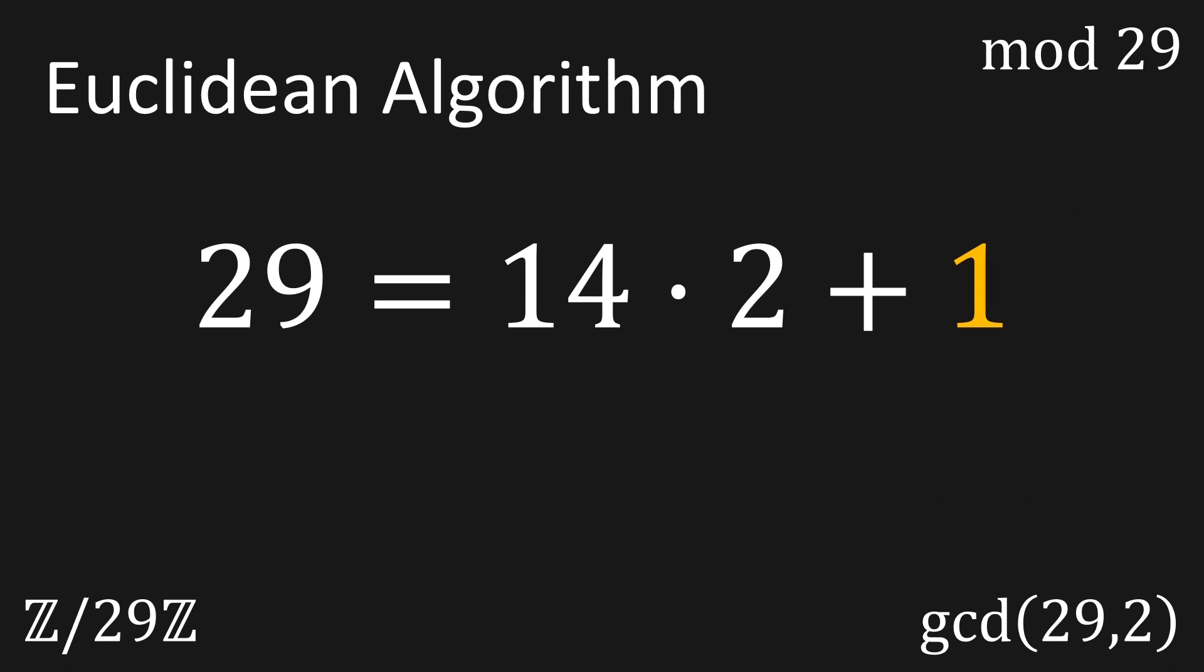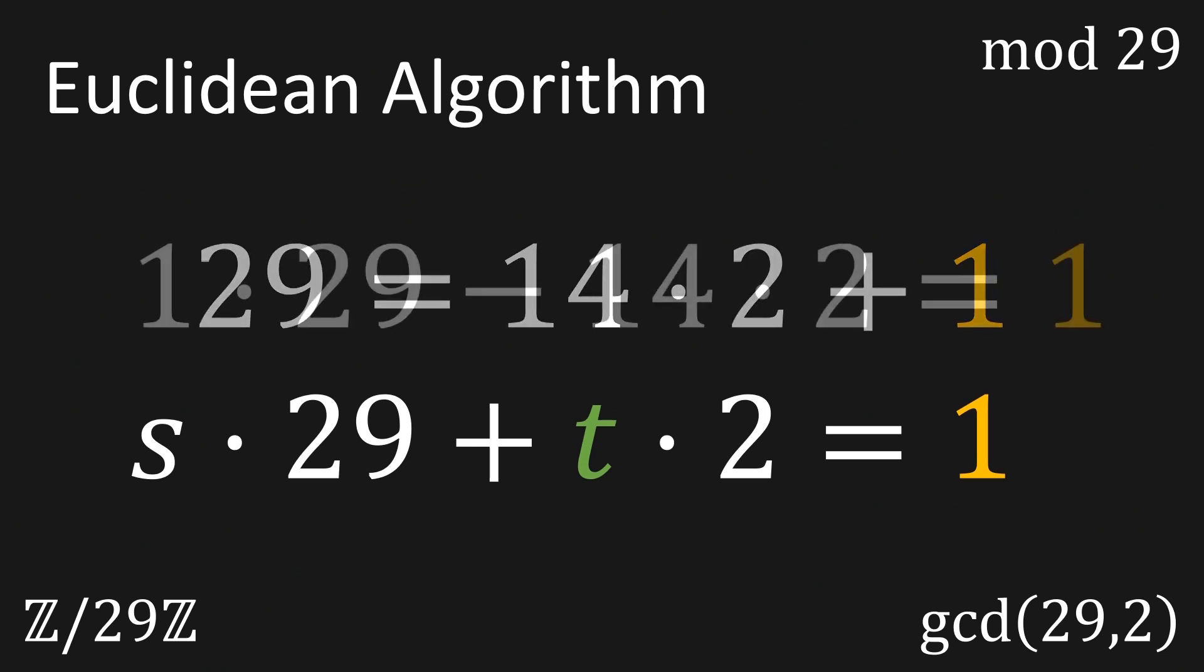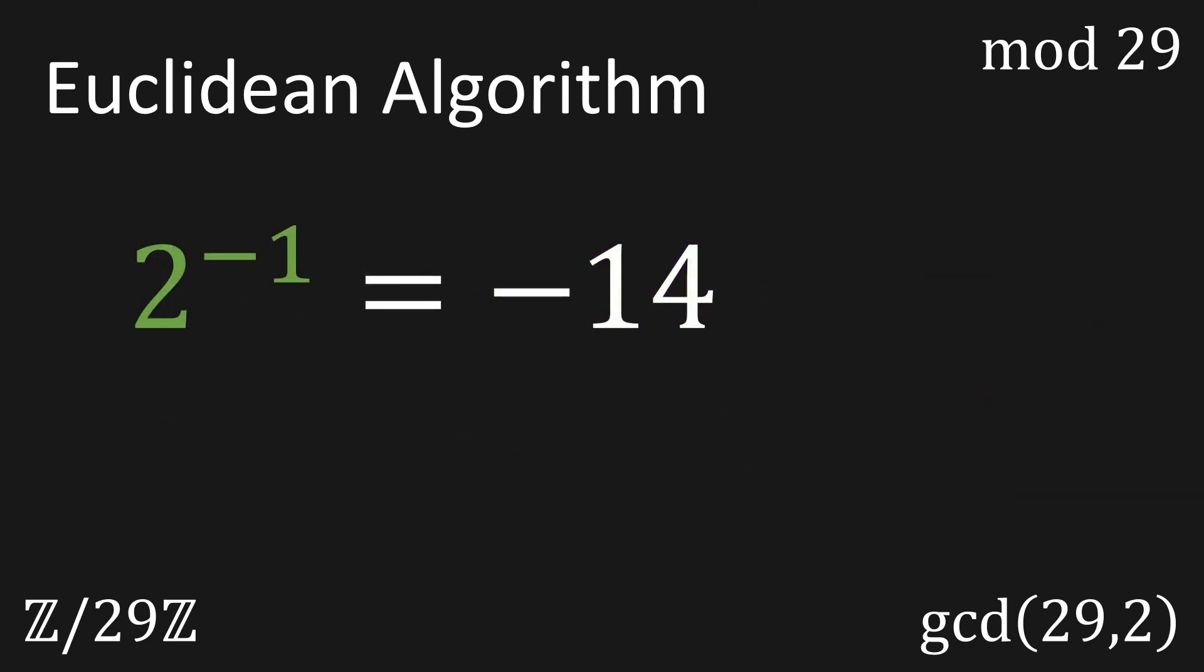But we already knew that since 29 is a prime number. The extended Euclidean algorithm gives you a linear combination of the two numbers 29 and 2. The factor t will be the multiplicative inverse of 2 modulo 29. Simply subtract 14 times 2 from 29 and you'll get this statement. t is minus 14. So the multiplicative inverse of 2 modulo 29 is minus 14.